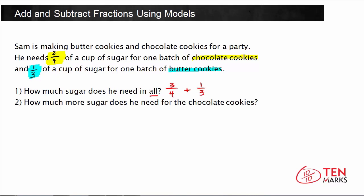As you can notice, these fractions are not like fractions because they have different denominators. So to find the sum, we need to think about how we can add these two fractions — we need to make them like fractions first.